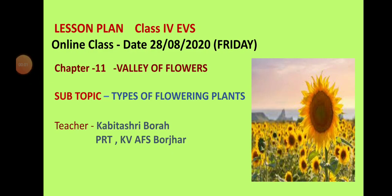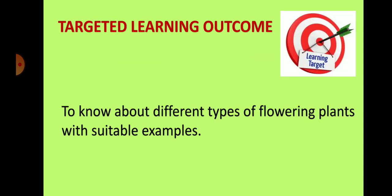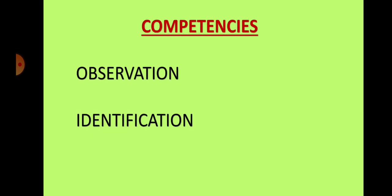Good morning children, it's time for today's EVS class. We are doing the eleventh chapter, Valley of Flowers. Today's subtopic is Types of Flowering Plants. The targeted learning outcome of today's class is to know about different types of flowering plants with suitable examples. The competences covered here are observation and identification.